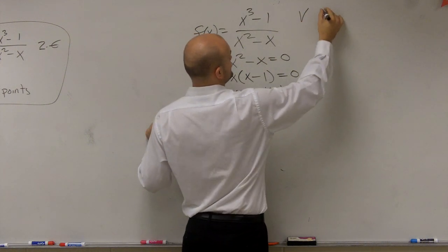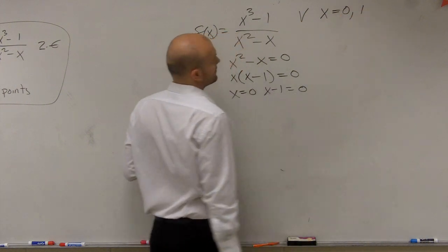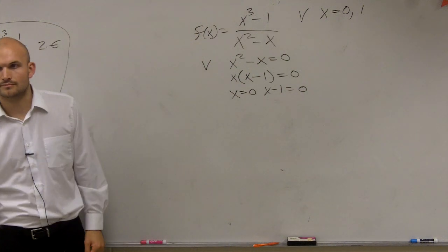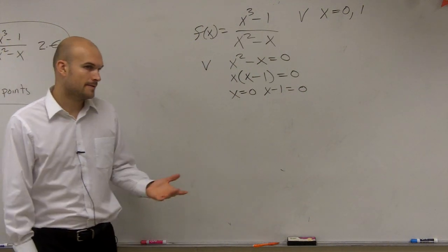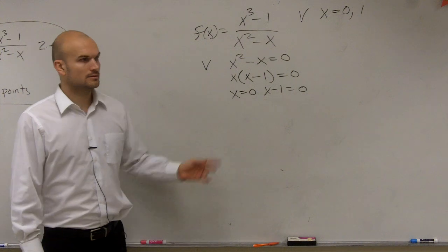Therefore, my vertical asymptotes are when x equals 0, and when x equals 1, right? Except for 1.